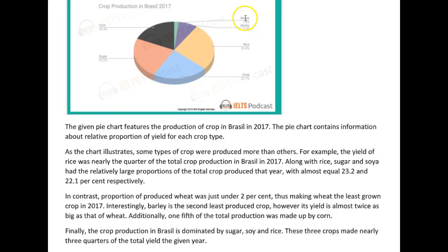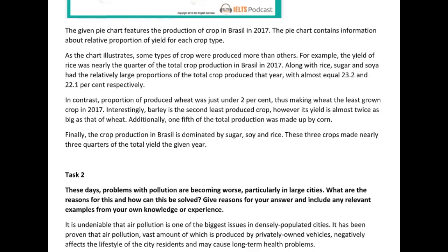You can do the math — it's three to four times as great as that of wheat. Then you say one-fifth of the total production was made up of corn — well, almost one-fifth. What I think is really worth saying here is that together these three crops make up just over a quarter of the total crop production. That's some important information. Then your conclusion was fine — you said what I wanted you to say.